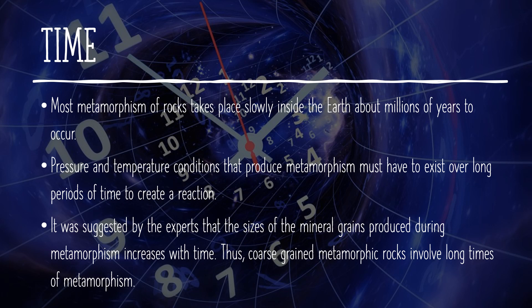Lastly, time is also an agent of metamorphism. Most metamorphism of rocks takes place slowly inside the Earth — about millions of years to occur. Pressure and temperature conditions that produce metamorphism must exist over long periods of time to create a reaction. It was suggested by experts that the sizes of the mineral grains produced during metamorphism increase with time. Thus, coarse-grained metamorphic rocks involve long times of metamorphism.